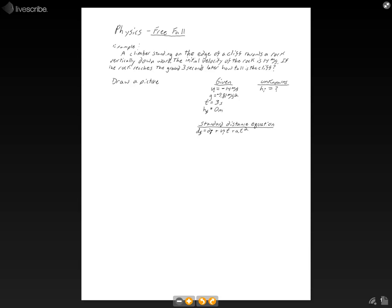For the free fall problem we have an example here. We have a climber standing on the edge of a cliff throwing a rock vertically downward. The initial velocity of the rock is 14 meters per second straight down. If the rock reaches the ground in 3 seconds, how tall is the cliff?